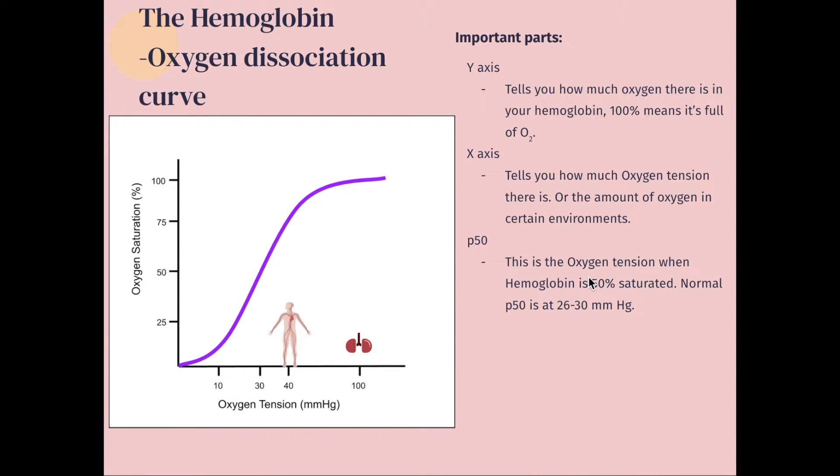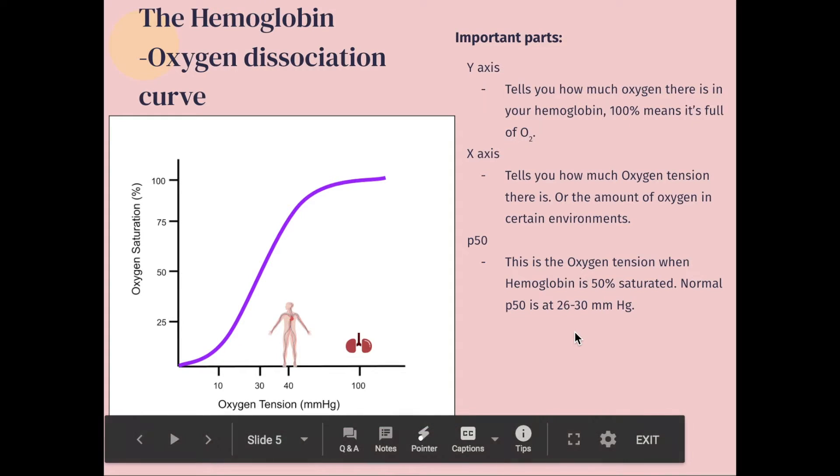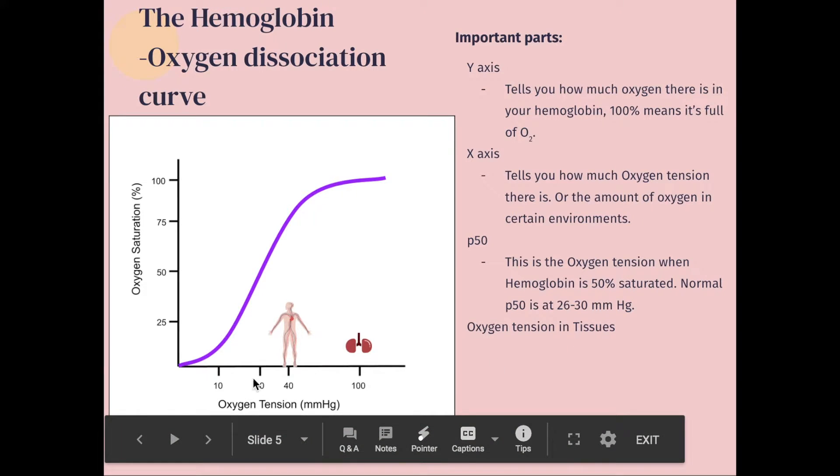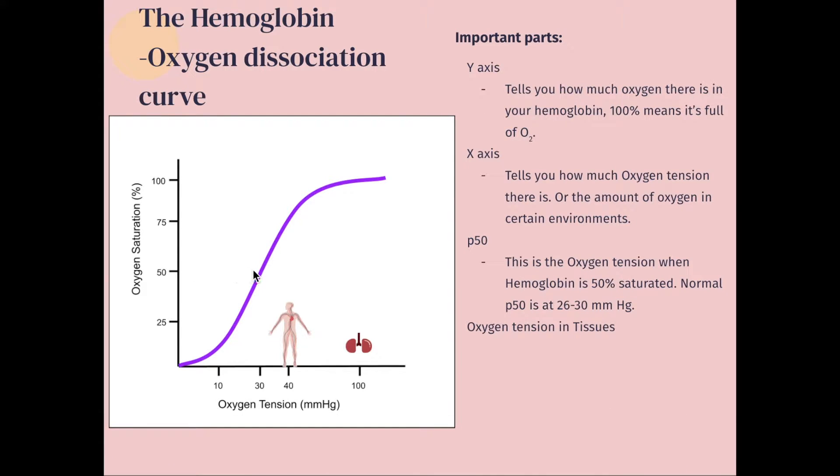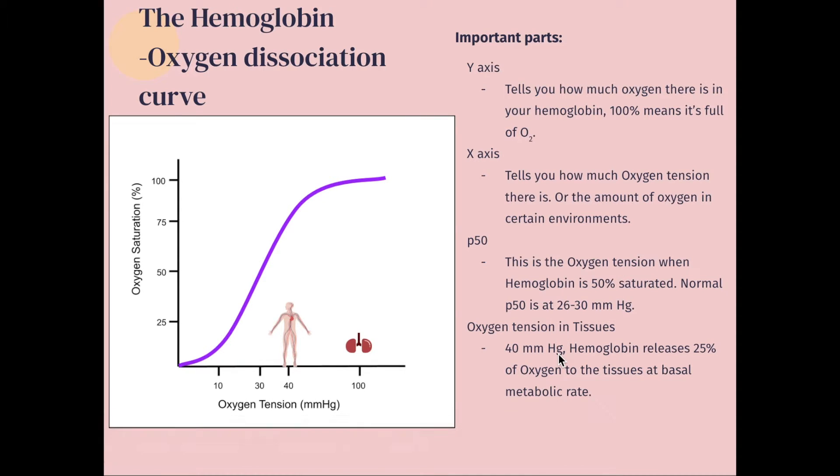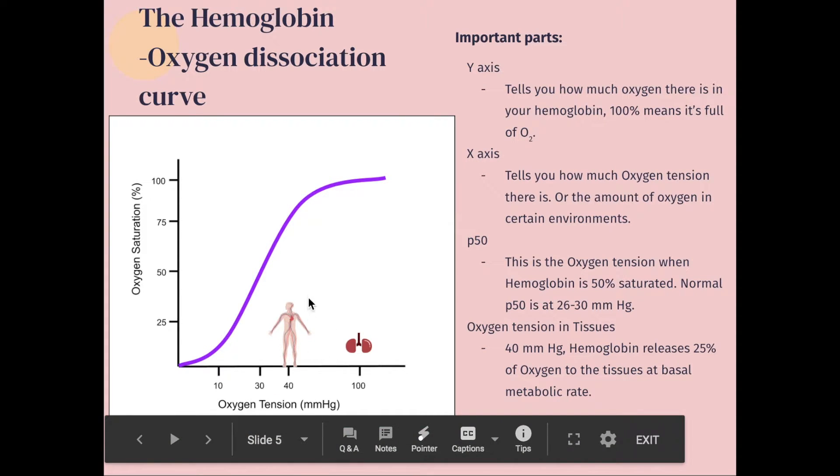So P50, this is the oxygen tension when hemoglobin is 50% saturated. Normal P50 is at 26 to 30 millimeters mercury. So this is where the oxygen tension is when your hemoglobins are 50% saturated with oxygen. So again, oxygen tension in tissues are at 40. So I placed the image here.